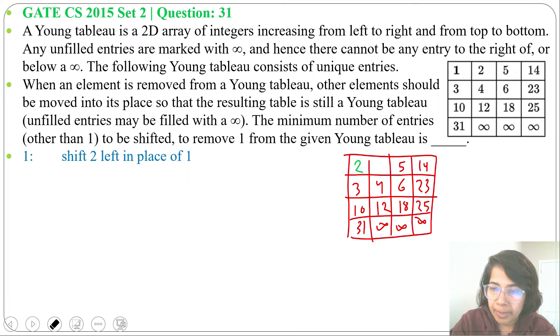So in place of 2 we can move this 4 up. When we move 4 up, it will be still a Young tableau: 2, 4, 5, 14 is in increasing order. Now this place is blank.